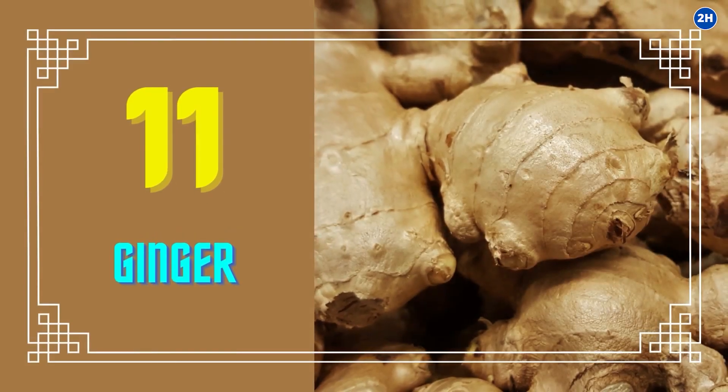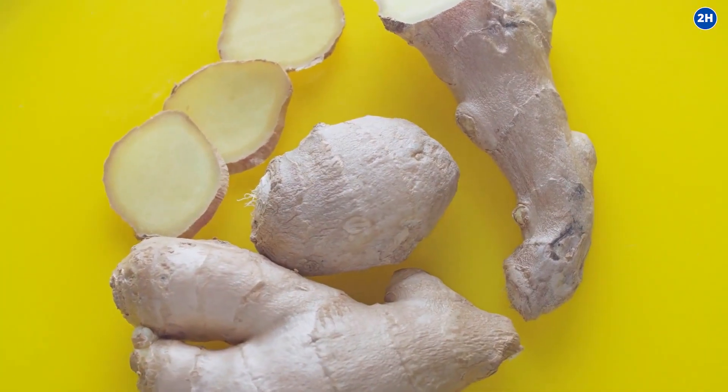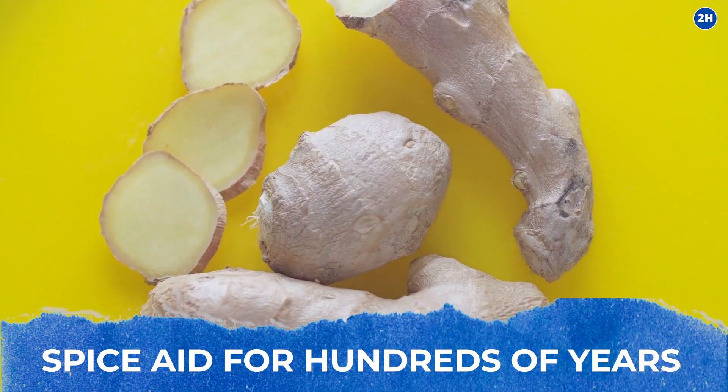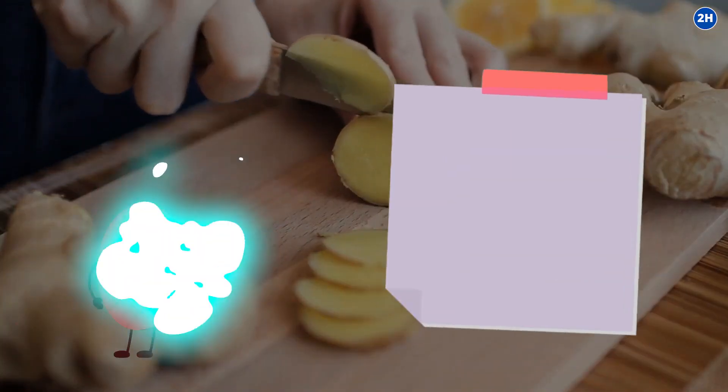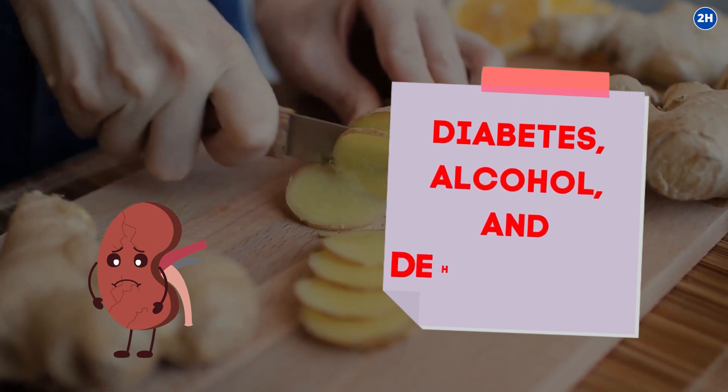11. Ginger. Ginger has been used as a spice aid for hundreds of years. It has been shown to protect the kidneys from damage caused by diabetes, alcohol, and dehydration.